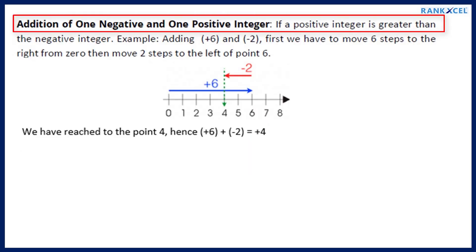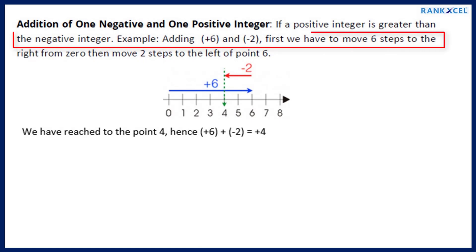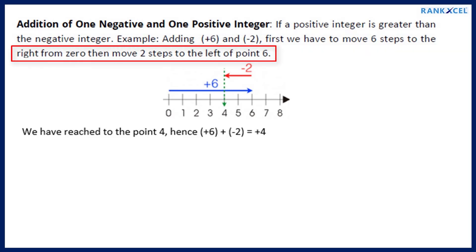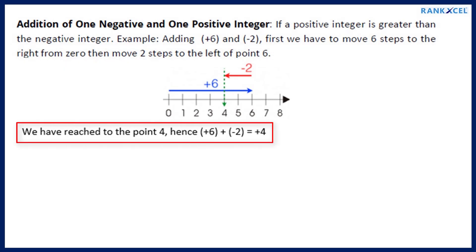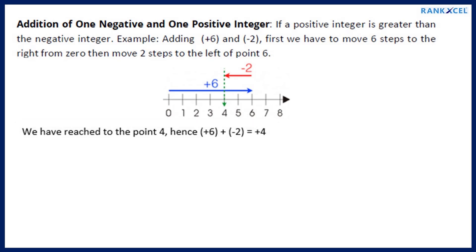Addition of 1 negative and 1 positive integer on a number line, where the positive integer is greater. Example: Adding plus 6 and minus 2. First we move 6 steps to the right from 0, then move 2 steps to the left. We have reached the point 4. Hence plus 6 plus minus 2 equals plus 4.